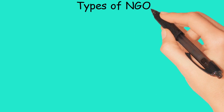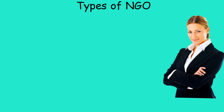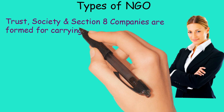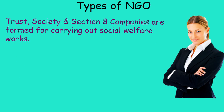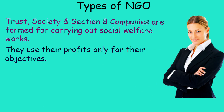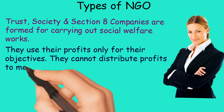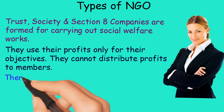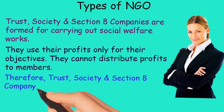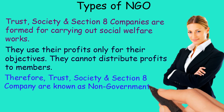Types of NGO. Trusts, Societies, and Section 8 Companies are considered NGOs as they are non-profit organizations. They are formed for carrying out social welfare works. They use their profits only for their objectives and cannot distribute profits to members. Therefore, Trusts, Societies, and Section 8 Companies are known as Non-Governmental Organizations.